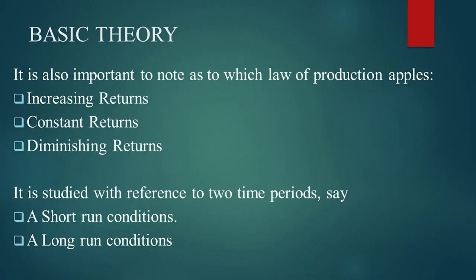It is very important to note which law of production applies. Basically there are three laws of production: the law of increasing returns, law of constant returns, and law of diminishing returns. These laws are to be studied with reference to the two time spans — short run conditions and long run conditions. Initially the increasing returns start happening, then constant returns for a very short period of time, and beyond that the diminishing returns apply.